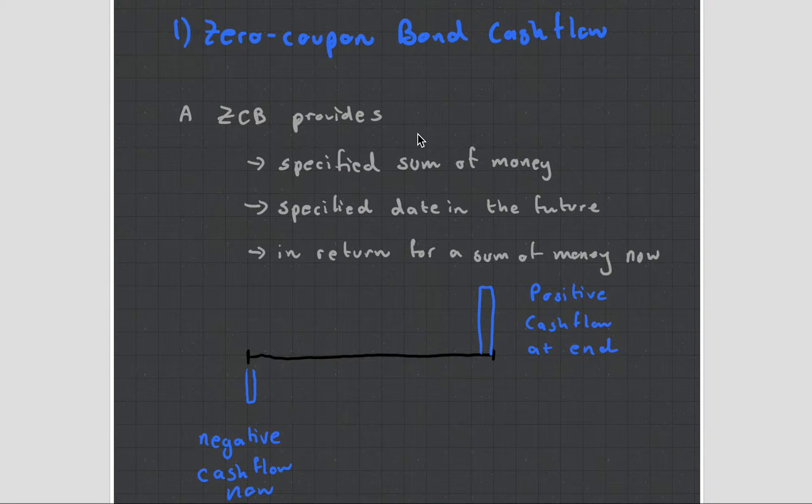The zero coupon bond provides a specified sum of money and it gives you a date in the future. So, what's happening is you'll put in an amount here, there will be a time period and then you'll get another amount. Normally, this amount here will be larger than this amount and that is due to interest. But we'll start talking about interest in more depth in chapter two. For now, we're just looking at the structures of the cash flows.